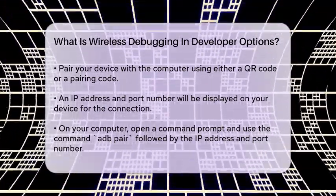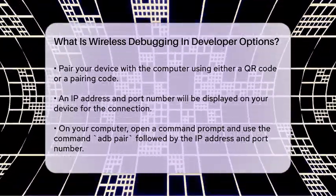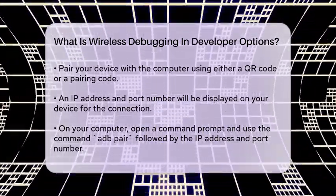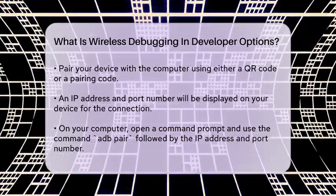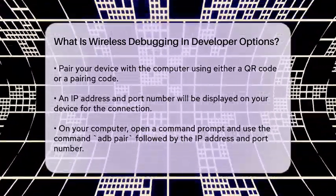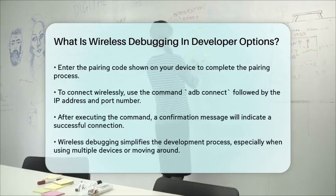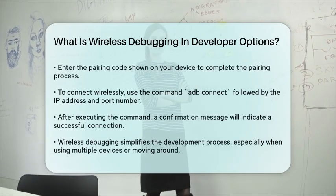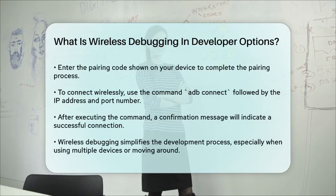When pairing, you'll see an IP address and port number on your device — you'll need these to establish the connection. On your computer, open a command prompt or terminal window and type ADB pair followed by the IP address and port number. You'll be asked for the pairing code displayed on your device. Enter this code, and you'll see a successful pairing message.